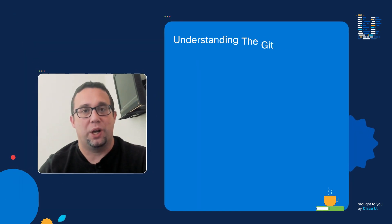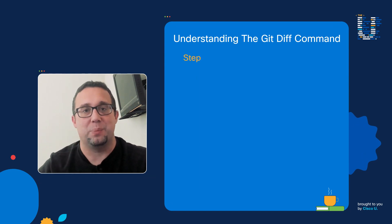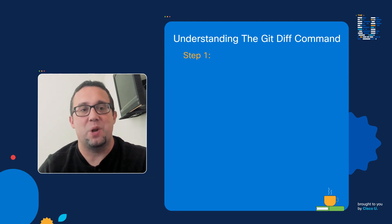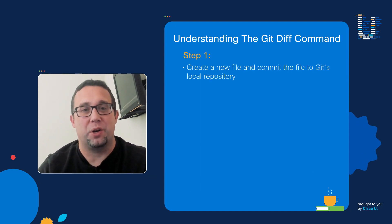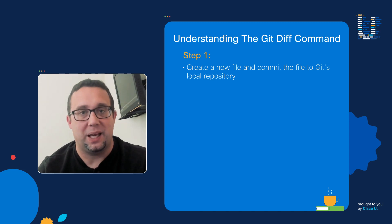Welcome to another episode of The U. My name is Robert Whittaker. Today I'm going to take you through a step-by-step demo and show you how to use the git diff command. We're going to do this in four simple steps. Step number one, we're going to create a brand new file and commit that file to Git's local repository.